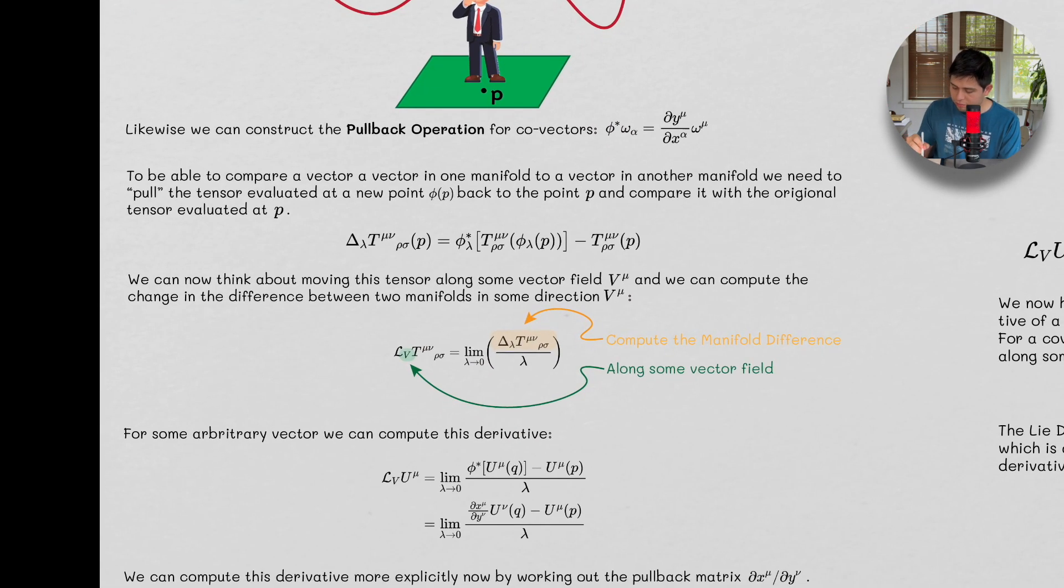To be able to compare a vector in one manifold to a vector in another manifold, we need to pull the tensor, evaluate it at a new point P, back to the original point P, and compare it with the original tensor evaluated at point P.